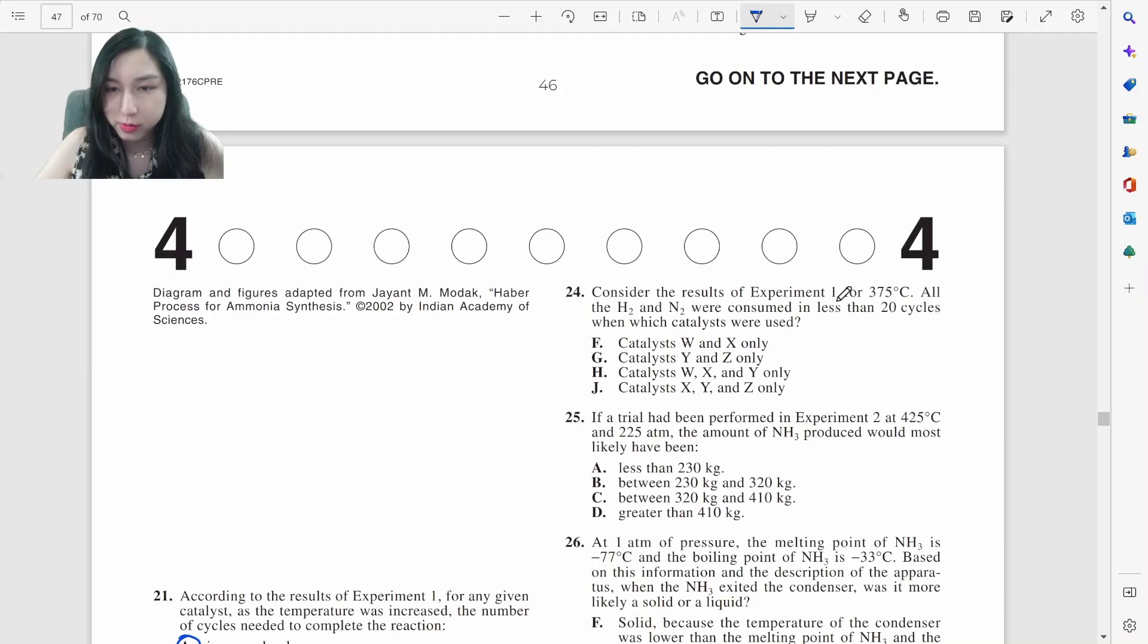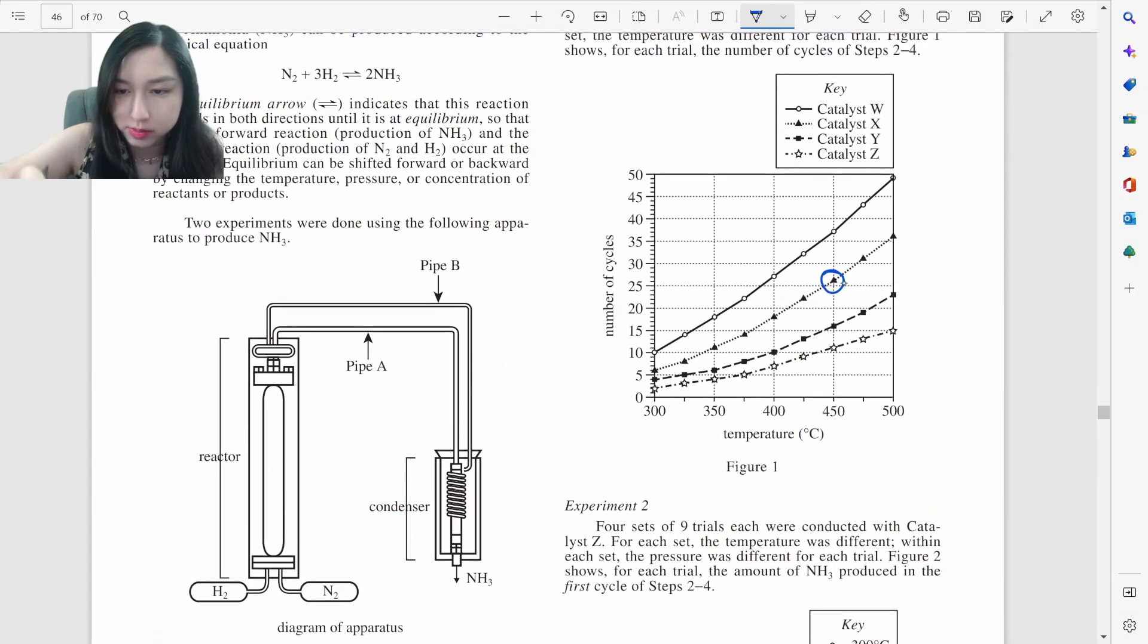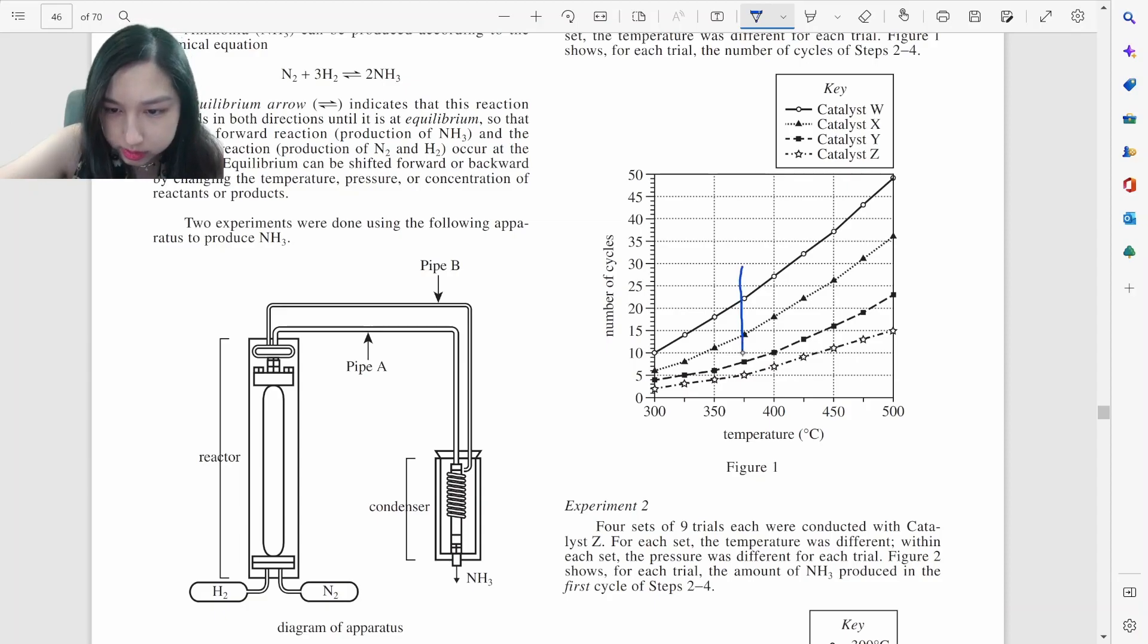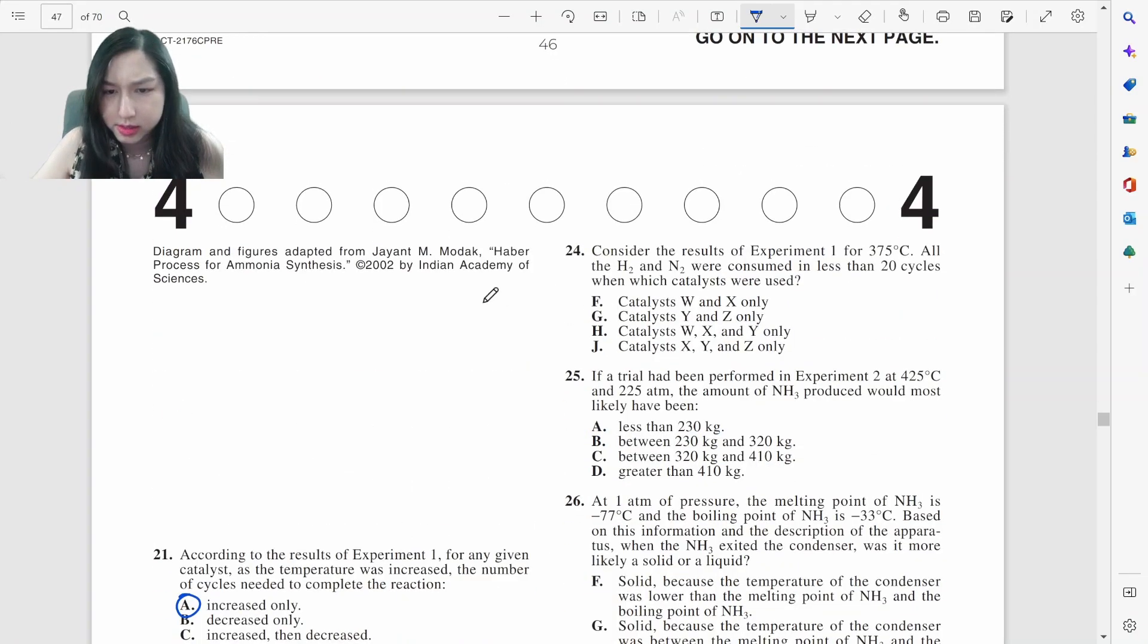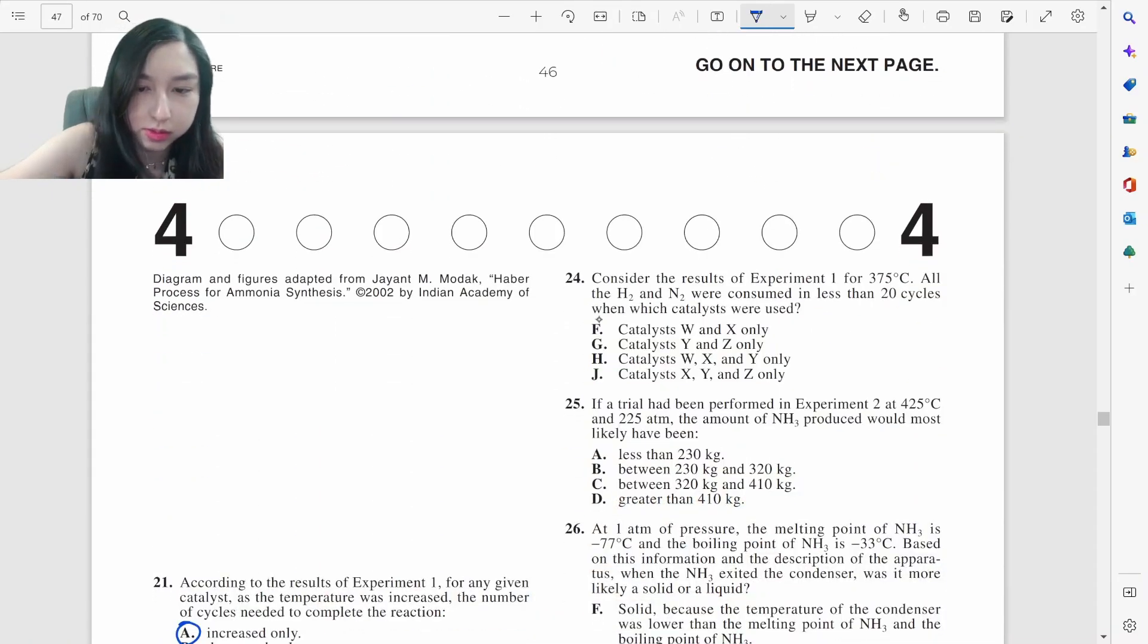Consider the results for experiment one for 375 degrees Celsius. This will consume in less than 20 cycles with which catalyst? So 20 cycles, less than, so basically everything except the circle, and the circle is W. So everything except W. So not F and H. It's going to be J.